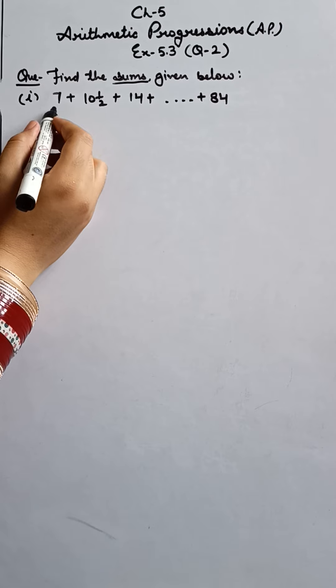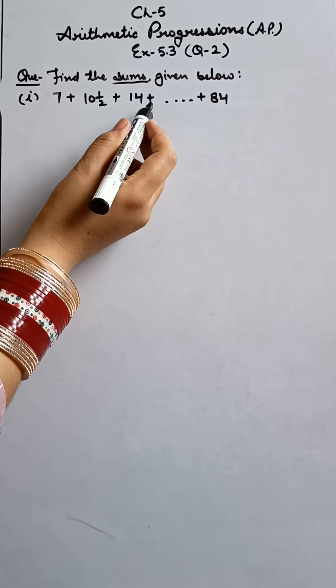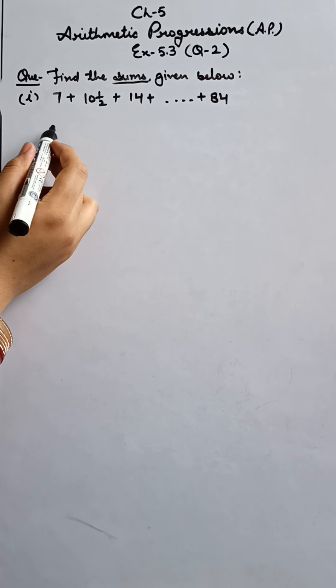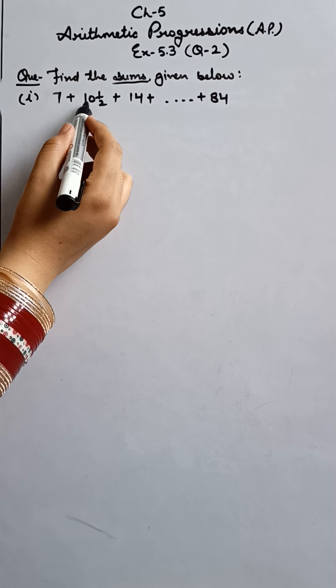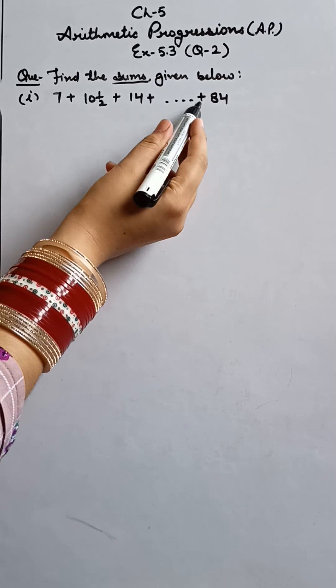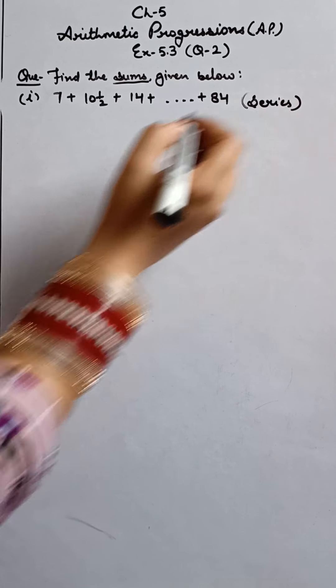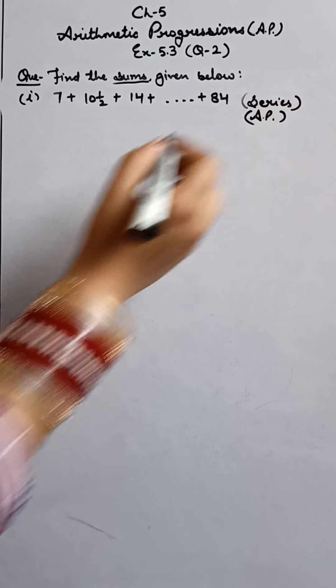So what is the question here? Basically one more thing here. When a sequence is there and plus signs are coming in between, you might say this is not an AP because there are no commas. But if a sequence comes with plus signs, what do we call that sequence? Series. And this series is also AP.